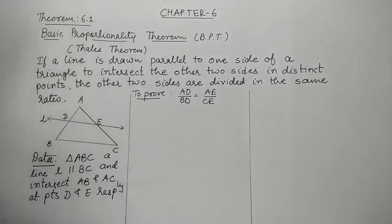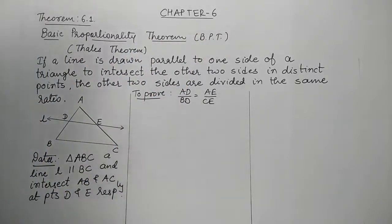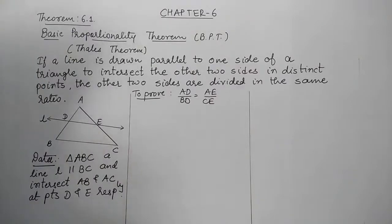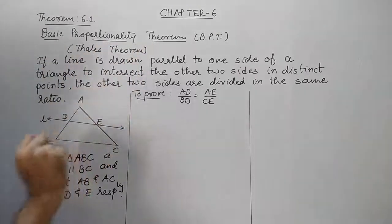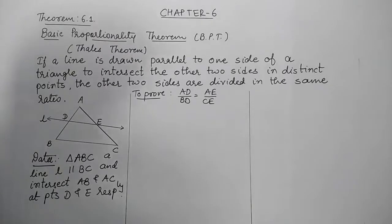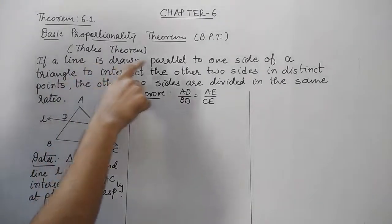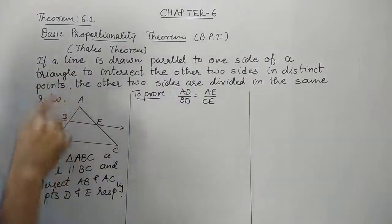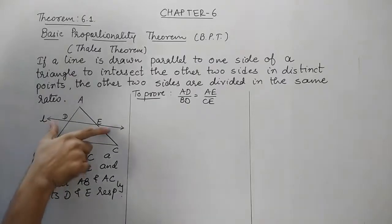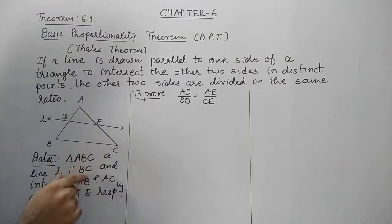Let us start with Theorem 6.1, which is one of the most important theorems. It is known as the Basic Proportionality Theorem, or BPT. It is also known as Thales' theorem, because the mathematician Thales derived this. Remember, you have to remember the statement — sometimes in exams the question asks you to state and prove the Basic Proportionality Theorem. The statement: if a line is drawn parallel to one side of a triangle — here in triangle ABC, line L is parallel to BC.